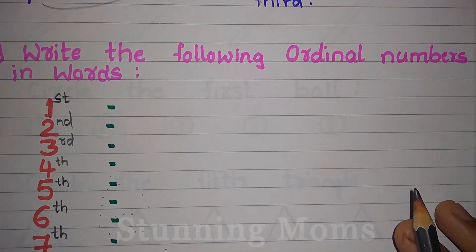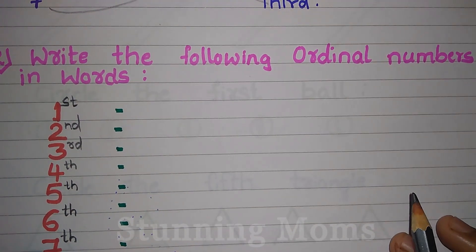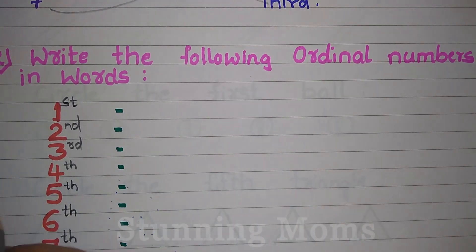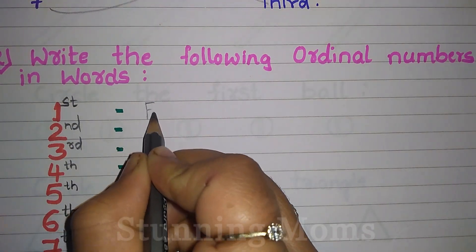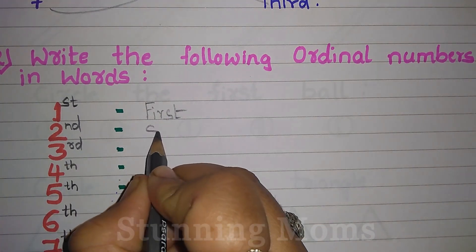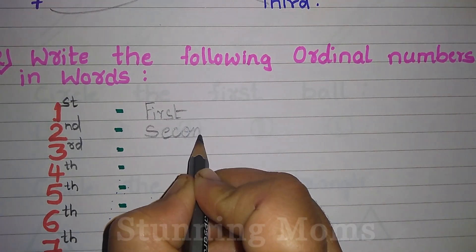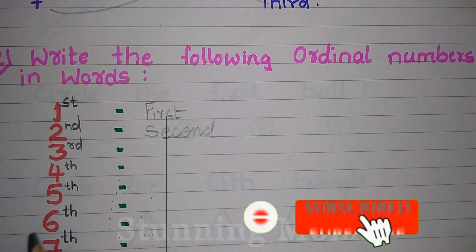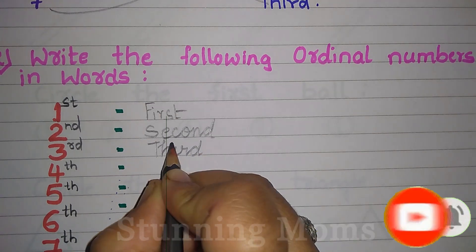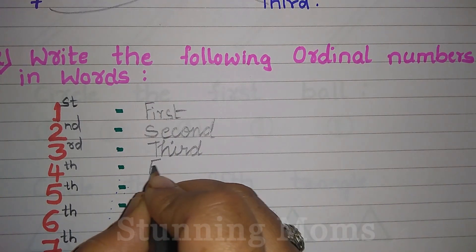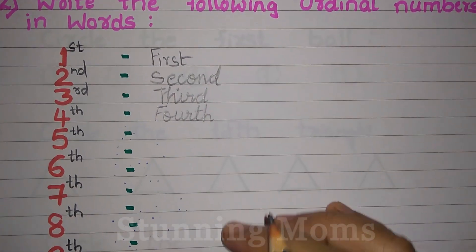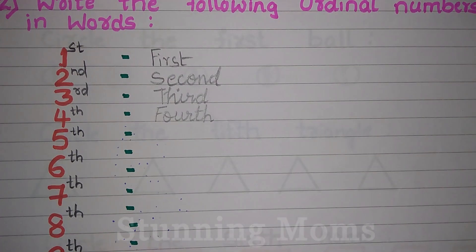Next, write the following ordinal numbers in words. Here is the first: F, I, R, S, T — First. Second: S, E, C, O, N, D — Second. Third: T, H, I, R, D — Third. Fourth: F, O, U, R, T, H — Fourth. So all the words are written like this.